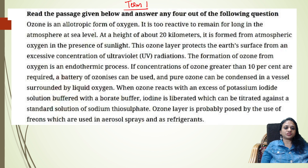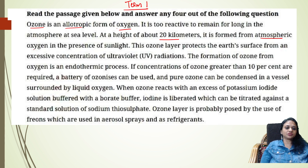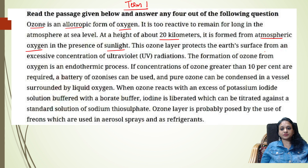Ozone is an allotropic form of oxygen. It is too reactive to remain for long in the atmosphere at sea level. At a height of about 20 kilometres, it is formed from atmospheric oxygen in the presence of sunlight. So at 20 km, sunlight is required for its formation. Ozone layer protects the earth's surface from an excessive concentration of ultraviolet rays.